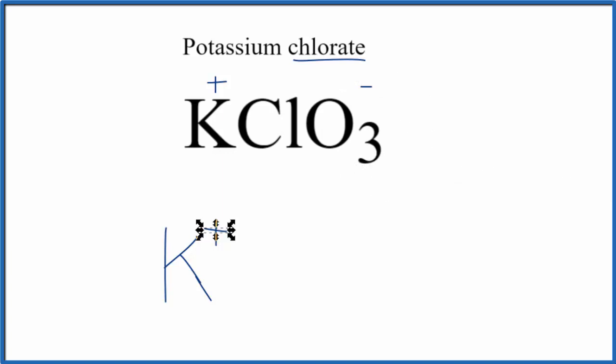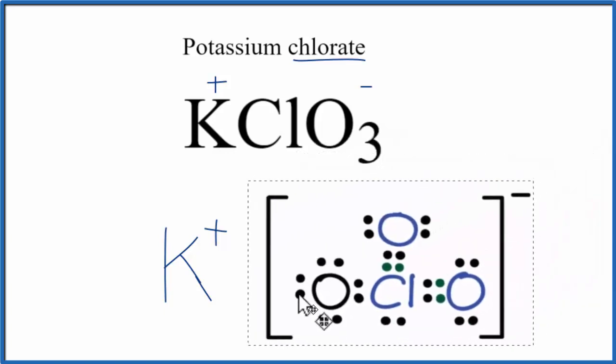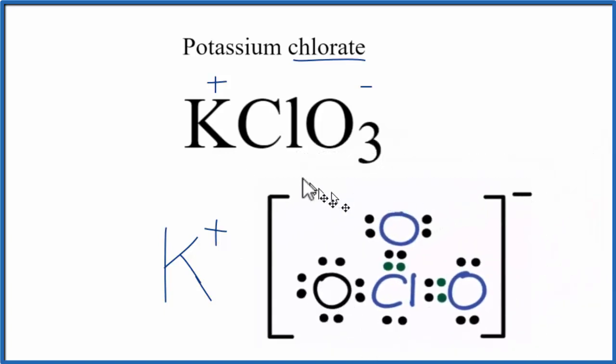You can watch my video on writing the Lewis structure for the chlorate ion. I'm just going to pull it in here. Because it's this negative ion, we put these brackets around it, and we have a negative charge. The negative charge is actually on the oxygen with the single bond, but we write it like this to show that the chlorate ion has a negative charge and potassium ion has a positive.